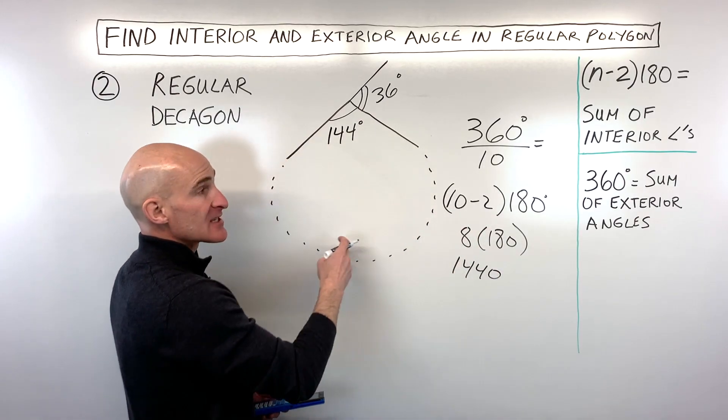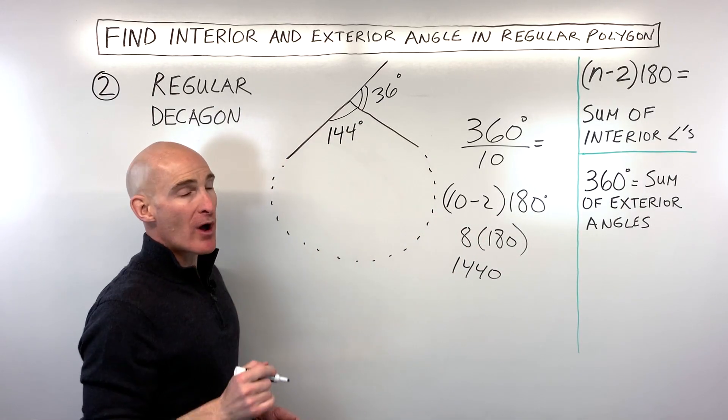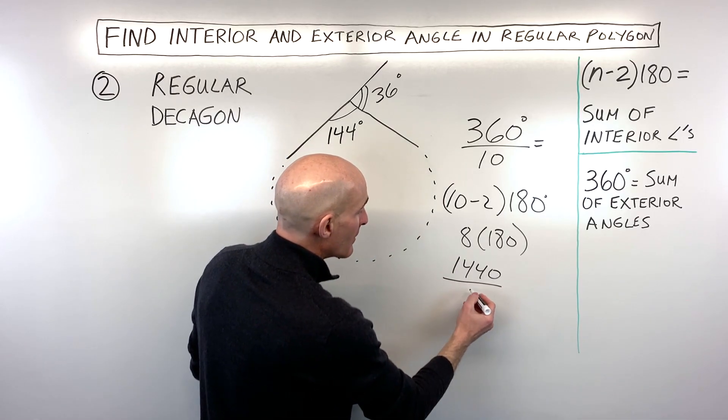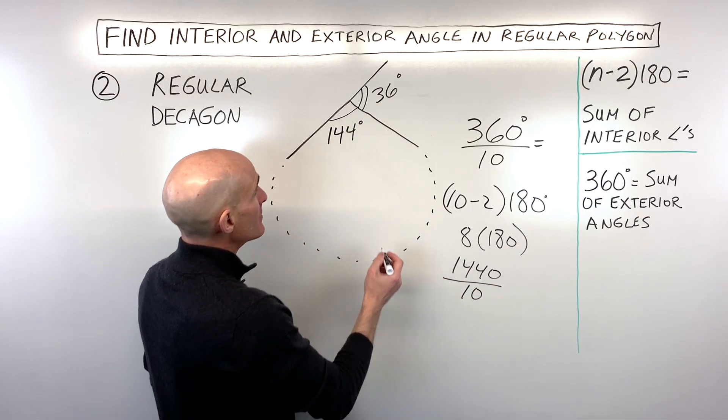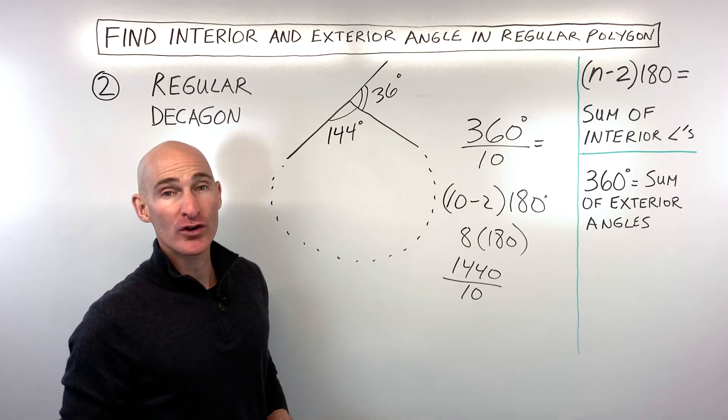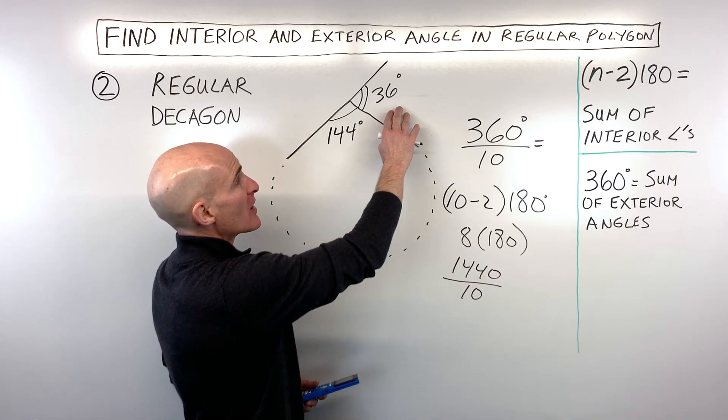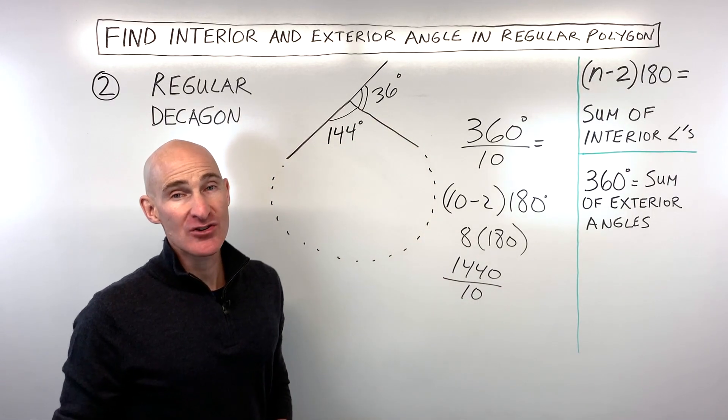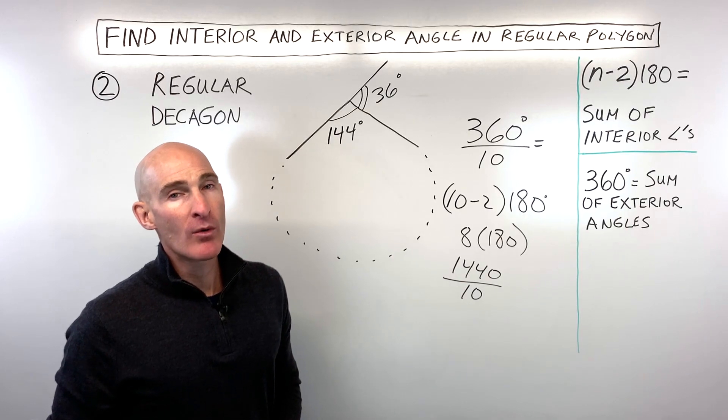But remember, that's the sum of all the interior angles. We just want one interior angle, so if we divide that by 10, that comes out to 144 degrees. Then all you have to do is subtract from 180, and you have your exterior angle. Let's take a look at one more example.